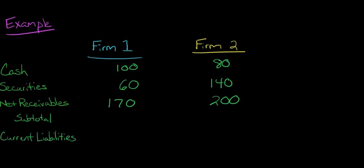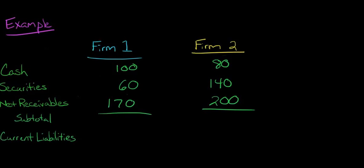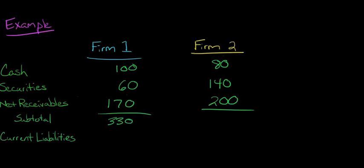And so just to make this a little bit easier, we'll just go ahead and subtotal these. And then this subtotal is basically current assets minus inventory. So when we do the subtotal, we end up with 330 for firm 1 and then 420 for firm 2.